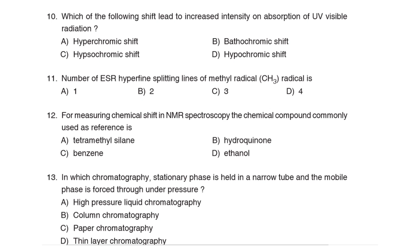10th Question: Which of the following shifts leads to increased intensity on absorption of UV-visible radiation? Correct Answer: Option A: Hyperchromic shift. 11th Question: Number of ESR hyperfine splitting lines of methyl radical is Correct Answer: Option D: 4. For measuring chemical shift in NMR spectroscopy, the chemical compound commonly used as reference is Option A: Tetramethylsilane (TMS).